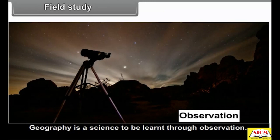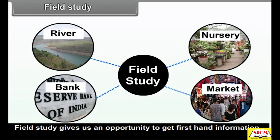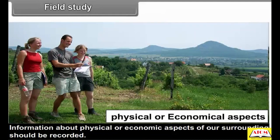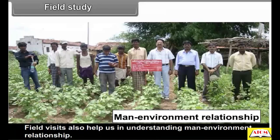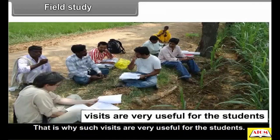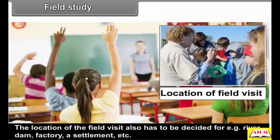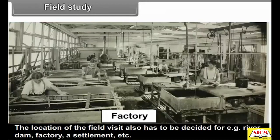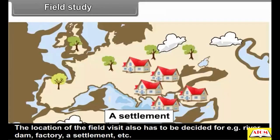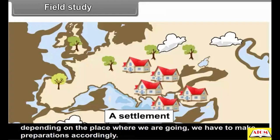9.3 Field Study: Geography is a science to be learnt through observation. Field study gives us an opportunity to get first-hand information. Information about physical or economic aspects of our surroundings should be recorded. Field visits also help us in understanding man-environment relationships, and that is why such visits are very useful for students. Before going for any field study, we have to plan it in the classroom. The location of the field visit also has to be decided, for example, a river, dam, factory, or settlement, and preparations must be made accordingly.